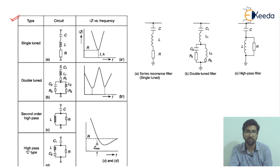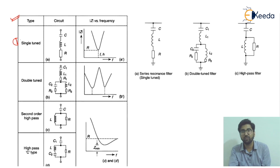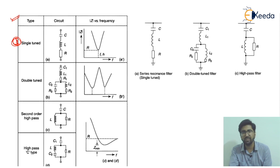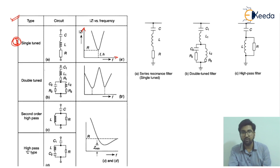The basic configurations and corresponding characteristic curves are provided here. For the single tuned filter, it consists of a capacitor, inductor, and resistor circuit, used on AC and DC lines. If we draw the waveform with impedance on one axis and frequency on the other, it forms a V-shaped curve.